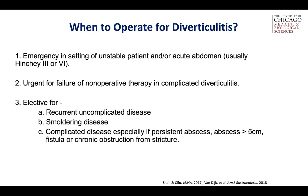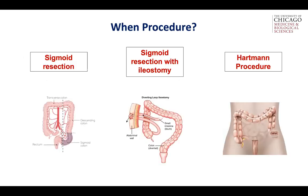For elective surgery in complicated disease, the current indications include patients who had complicated disease, went home, but have a persistent abscess on imaging, an original abscess greater than five centimeters, fistula, or chronic obstruction. These are the current indications for prophylactic sigmoid resection. As for what operation to perform, there are three options: sigmoid resection with primary anastomosis, sigmoid resection with ileostomy, or a Hartmann's procedure with sigmoid resection and end colostomy.